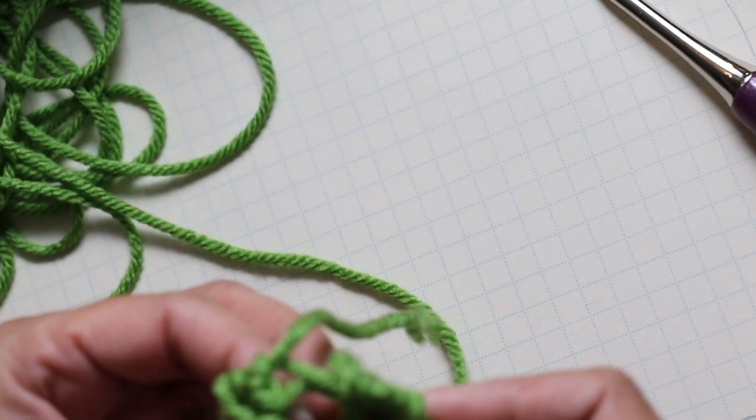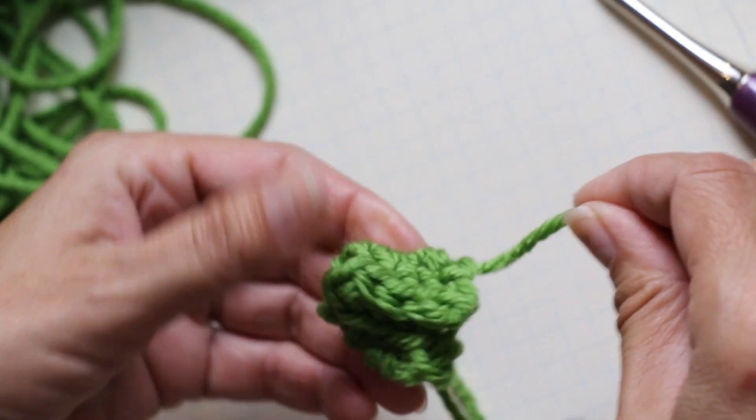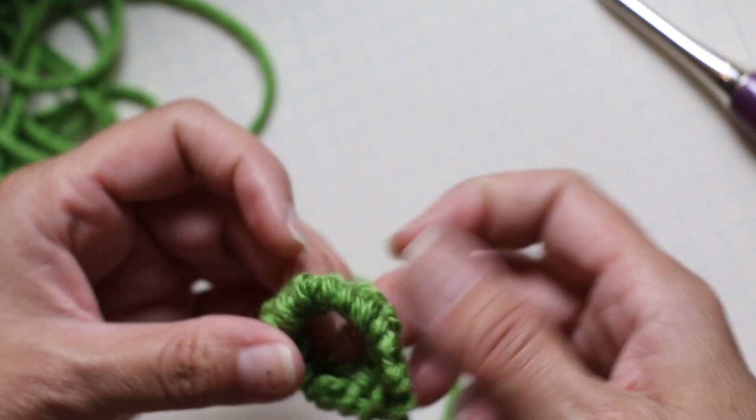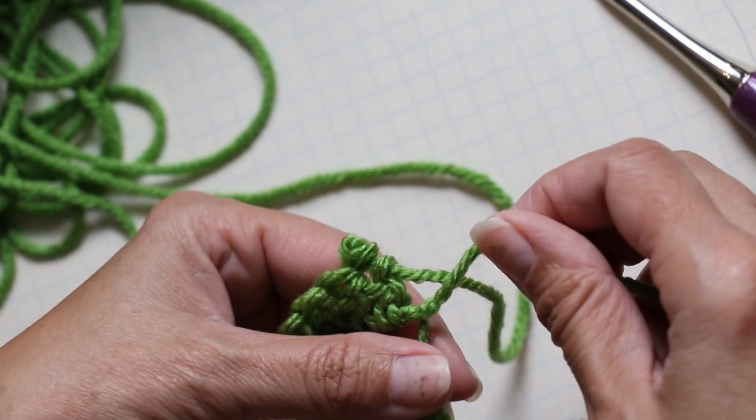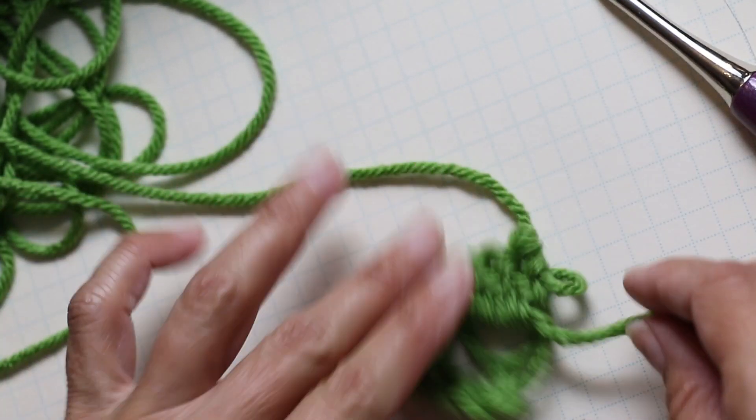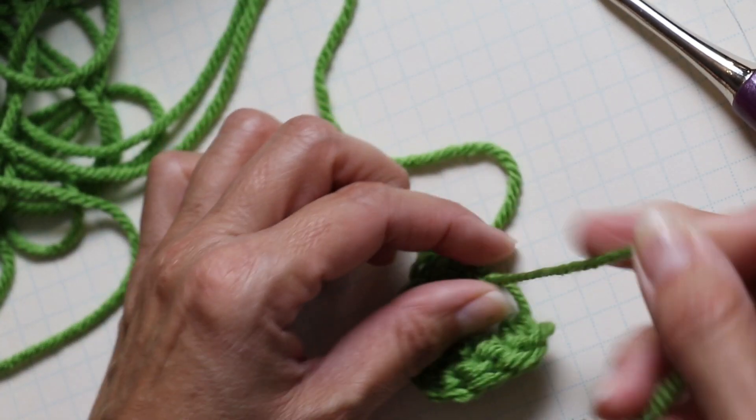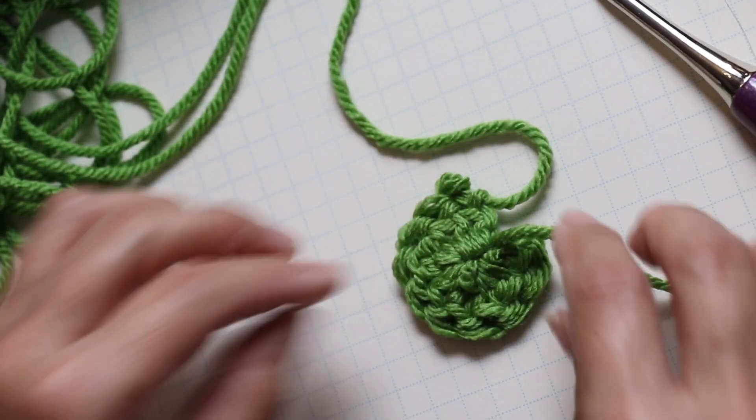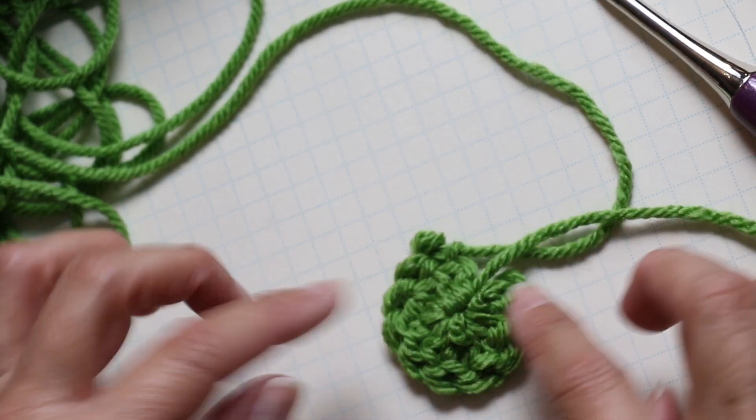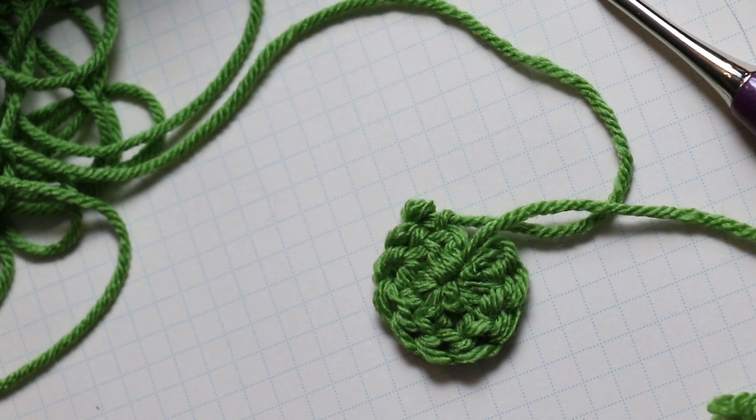As you pull your magic circle, which is this yarn right there, it closes in on each other. I need to make some more stitches to make it actually round, but look, that center is really tight and that's what you're going for in the magic circle. Hope that helps!